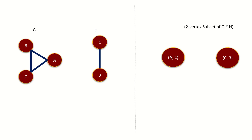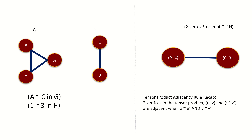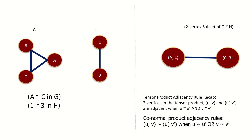For example, say we have two vertices A1 and C3 in the conormal product of graphs G and H shown here, whose left entries are adjacent in G and whose right entries are adjacent in H — they'll still connect, as we're using an inclusive OR. Notice that this implies that any two vertices adjacent in the tensor product of two graphs are also adjacent in the conormal product, because the OR allows the case where both left and right entries are adjacent in their respective graphs, which is precisely the condition for adjacency in a tensor product.